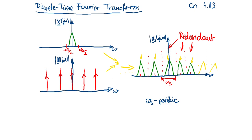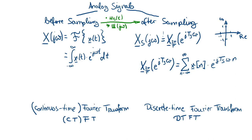This is not an optimal representation because we have so much redundant information here. The question is: can we find a way to drop all the redundant information and just focus on the original information? There is a method to only focus on one sample of the original information, and this is the Discrete-Time Fourier Transform, which we will consider in this video.